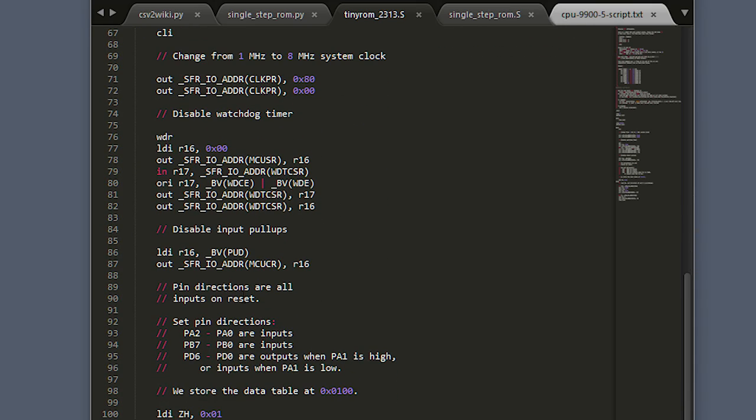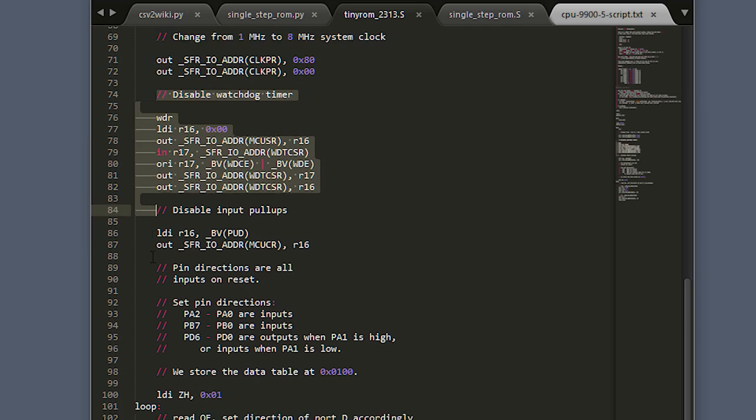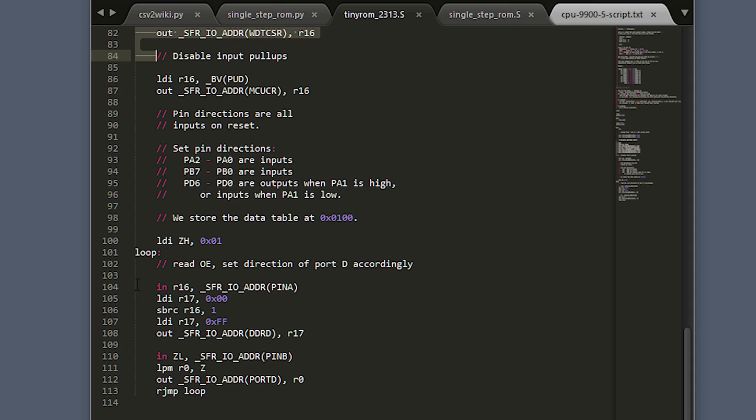The code for the ROM is written in assembly. Here, I'm using port B as the address lines, and port D as the data lines. We shut off the watchdog timer first, as before, and then just loop.